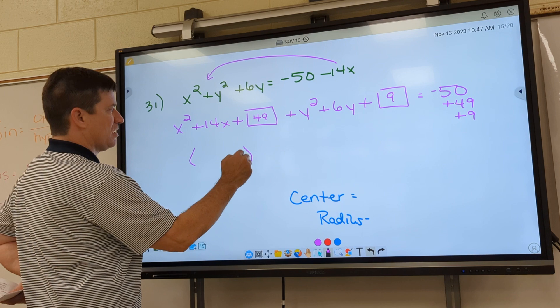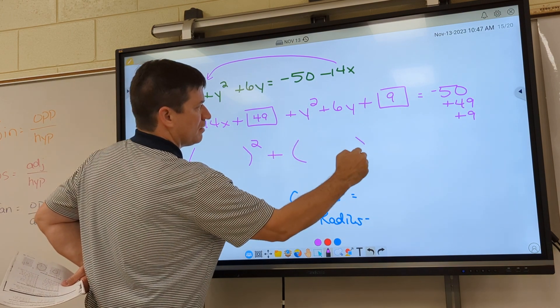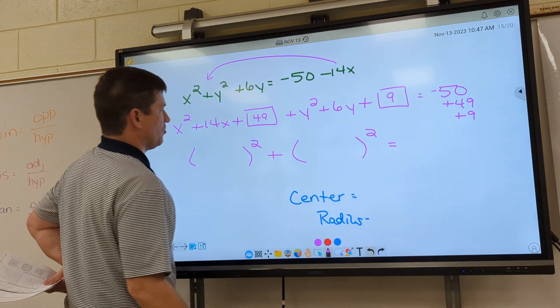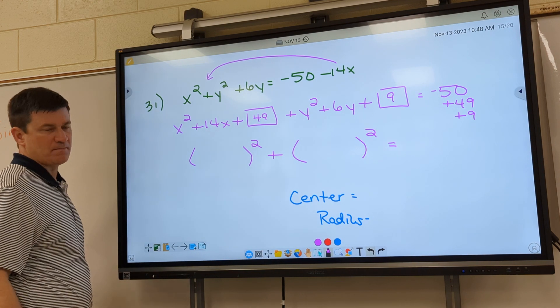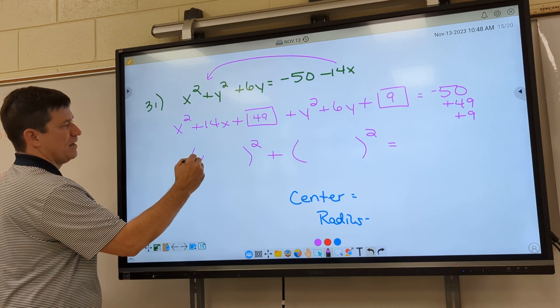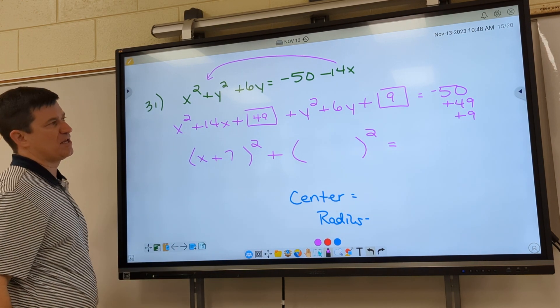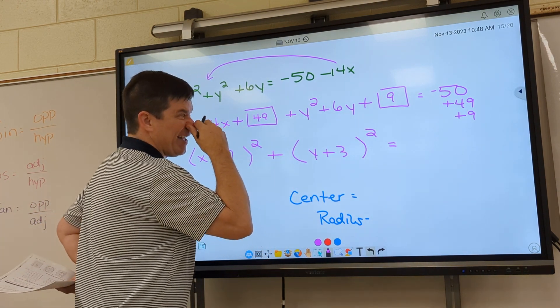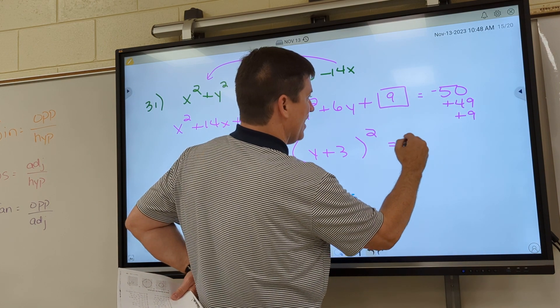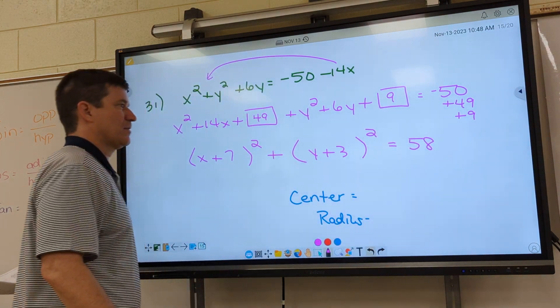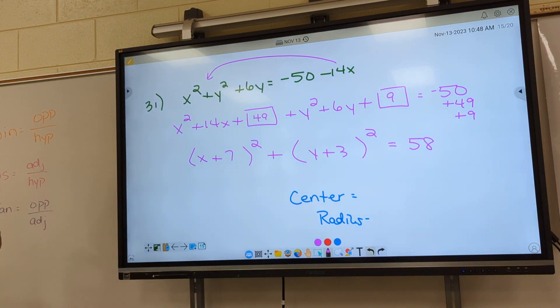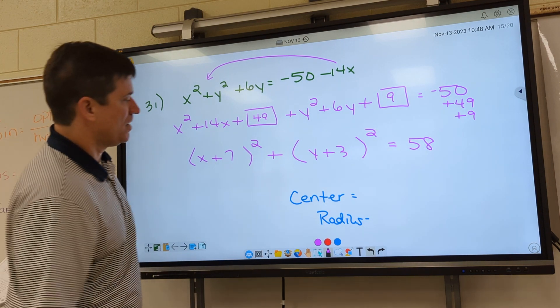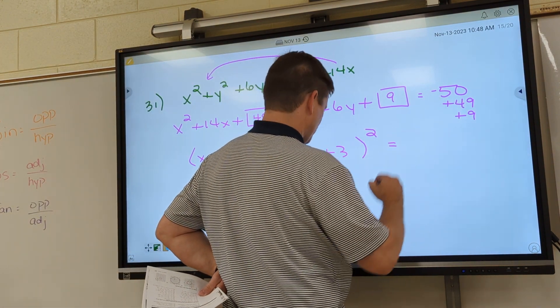All right. So getting close. All right. Hunter, what goes in this first parenthesis? X plus 7. X plus 7. Second parenthesis. X plus 3. Y plus 3. And if you add this up, I'm guessing 58. All right. So Hunter, that's a negative 50. That's an 8. It's an 8. Oh, you're right. Sorry. Appreciate it.